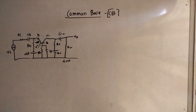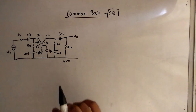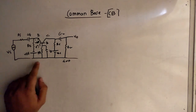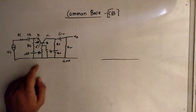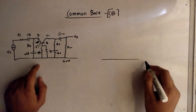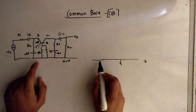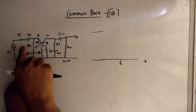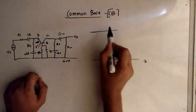Now let's draw the mid-frequency AC analysis. To draw that we mark the terminals B, C, and E. The base is at the bottom and is connected to ground — a very important point. The emitter E is on the left-hand side.